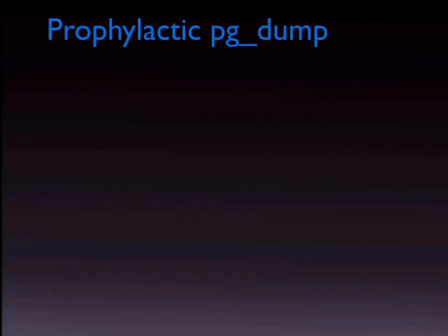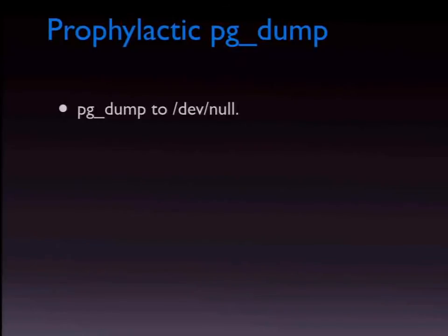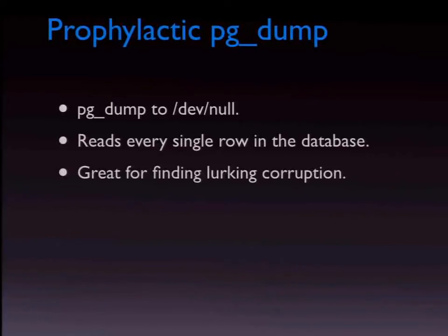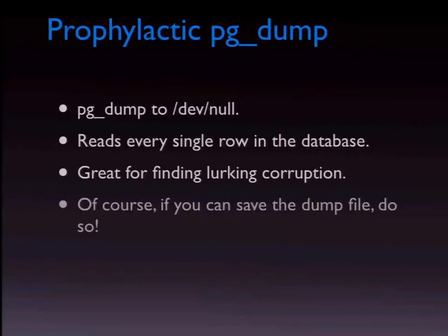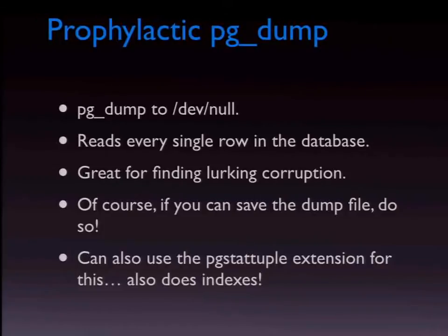I like to do a pg_dump to /dev/null on the whole database. If you have a 12-terabyte database, you probably haven't read every single block recently. It doesn't get indexes, since pg_dump doesn't dump indexes, but it does get all the data pages — it's amazing when this suddenly errors out on a part of a table that's never been touched for a long time. You can also use pgstattuple to do this kind of scan, and that does cover indexes. This is not zero performance impact, so pick an appropriate time.